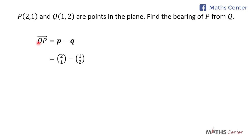So the vector KP will be equal to (2, 1) minus (1, 2). 2 minus 1 gives us 1, and 1 minus 2 gives us negative 1. So the vector KP is equal to (1, -1).